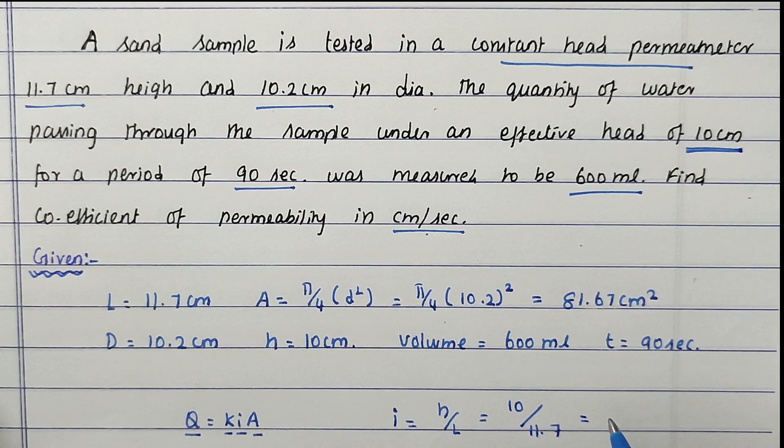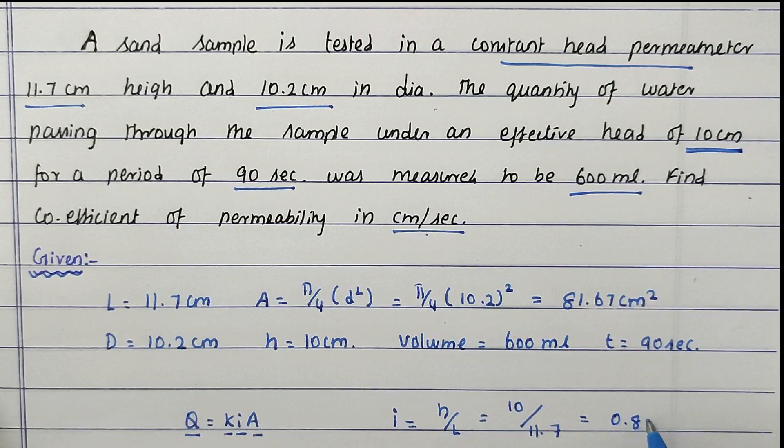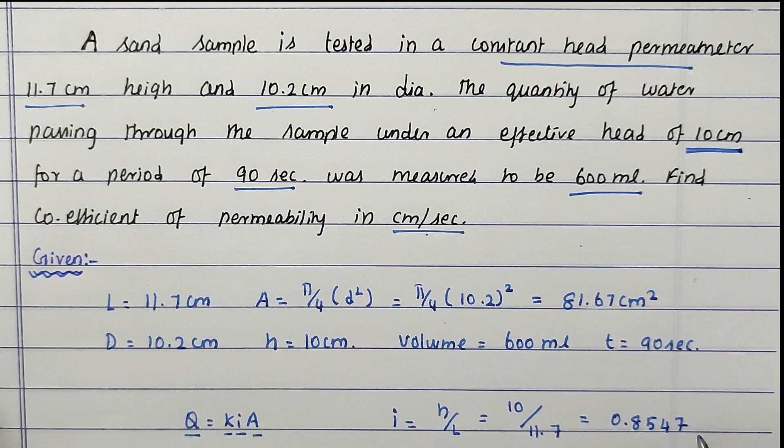Solving this, we get the value of 0.8547. So the i value we have found. Now we can substitute all the values.